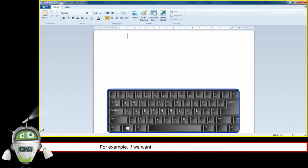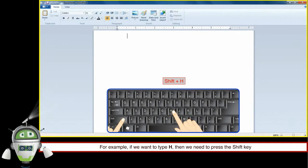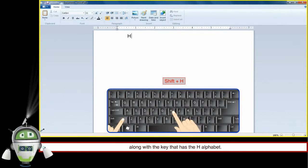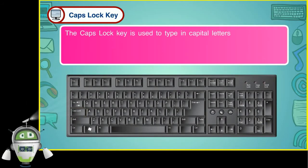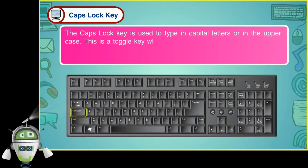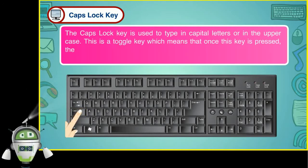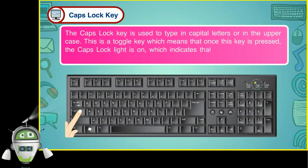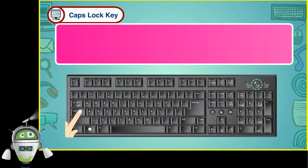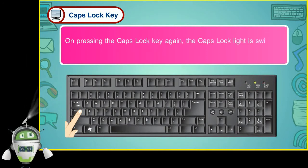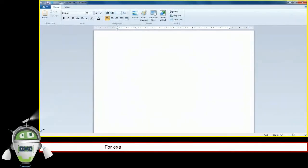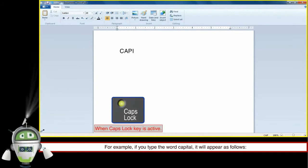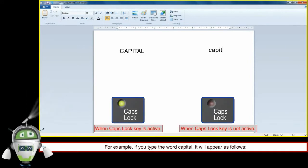For example, if we want to type H, we need to press the Shift key along with the H key. Caps Lock key: The Caps Lock key is used to type in capital letters or in uppercase. This is a toggle key, which means that once this key is pressed, the Caps Lock light is on, indicating that Caps Lock is active. On pressing the Caps Lock key again, the light is switched off. For example, if you type the word 'capital', it will appear as CAPITAL when Caps Lock is active, and as 'capital' when it is not active.